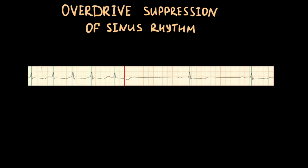By the way, the sinus node itself can also be overdrive suppressed by the same mechanism when driven by a faster rhythm, such as atrial tachycardia, atrial fibrillation, or flutter.